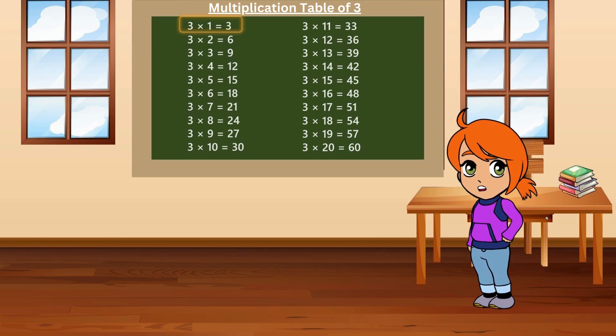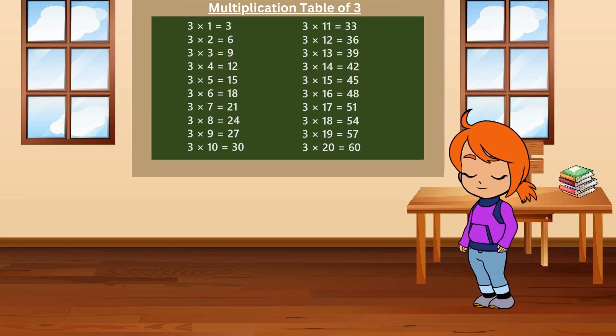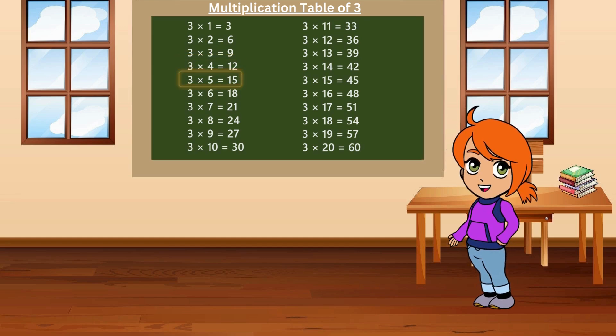Three ones are three. Three twos are six. Three threes are nine. Three fours are twelve. Three fives are fifteen.